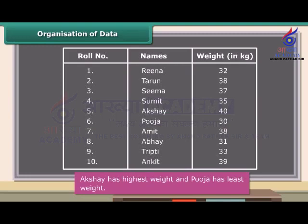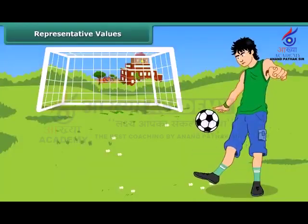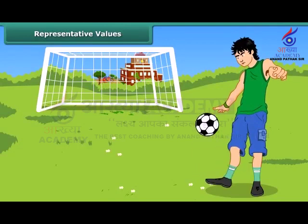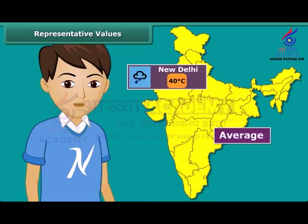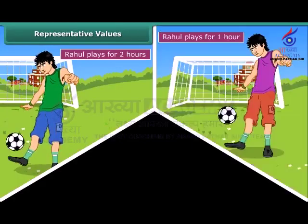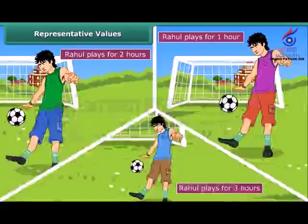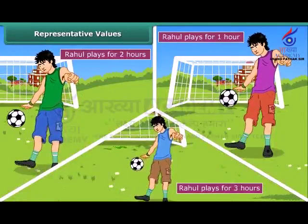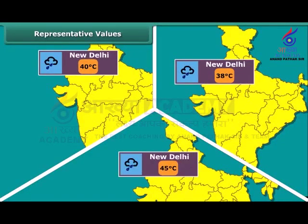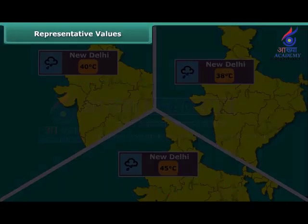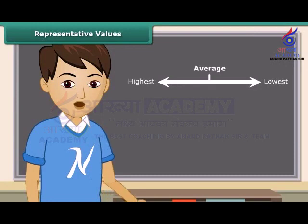We can put many kinds of data in tabular form. Rahul spends on an average about 2 hours daily for his outdoor games. The average temperature of New Delhi at this time of the year is about 40 degrees Celsius. Have you noticed the word average? By average, we understand that Rahul usually plays for 2 hours. On some days he may play for less number of hours and on other days he may play longer. Similarly, the average temperature of 40 degrees Celsius means the temperature of New Delhi at this time of the year is around 40 degrees Celsius. Thus, we realize that average lies between the highest and the lowest value of the given data.